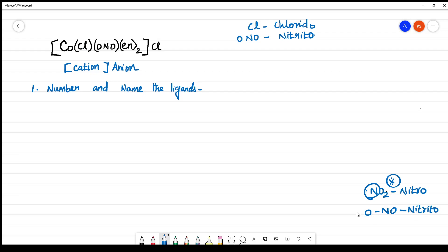What is the donating center? O will be coordinated with the central atom Co. Here N will be coordinated with the central atom Co. Next, another ligand. What is the another ligand? It is en. What is en? En is ethylene diamine. It is CH2NH2, CH2NH2.